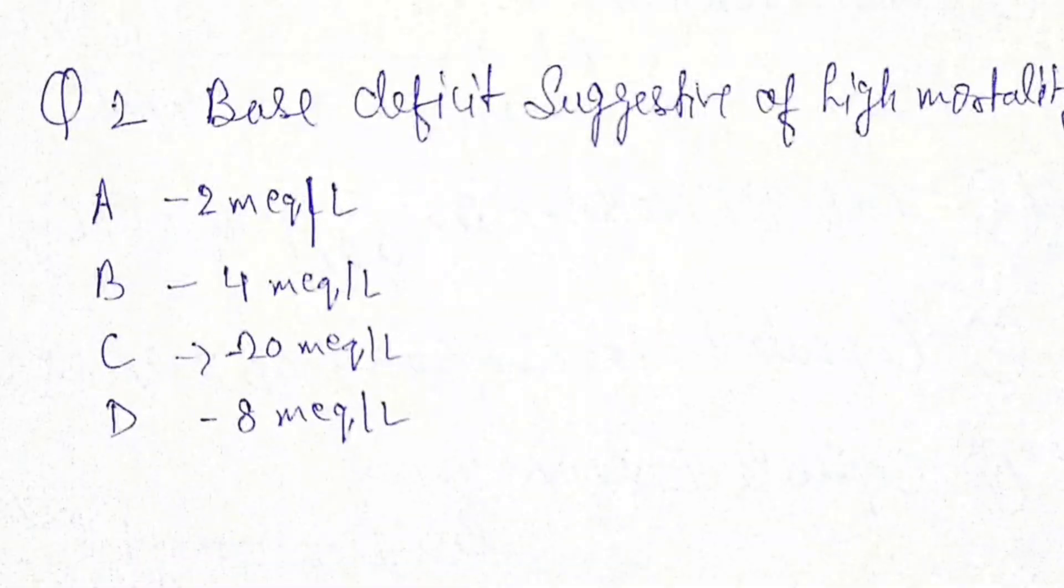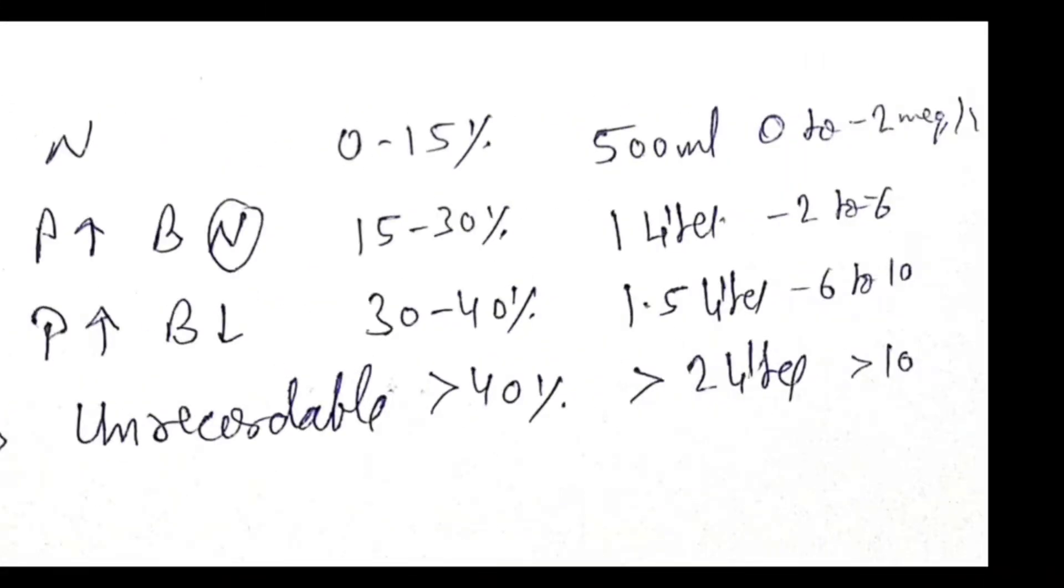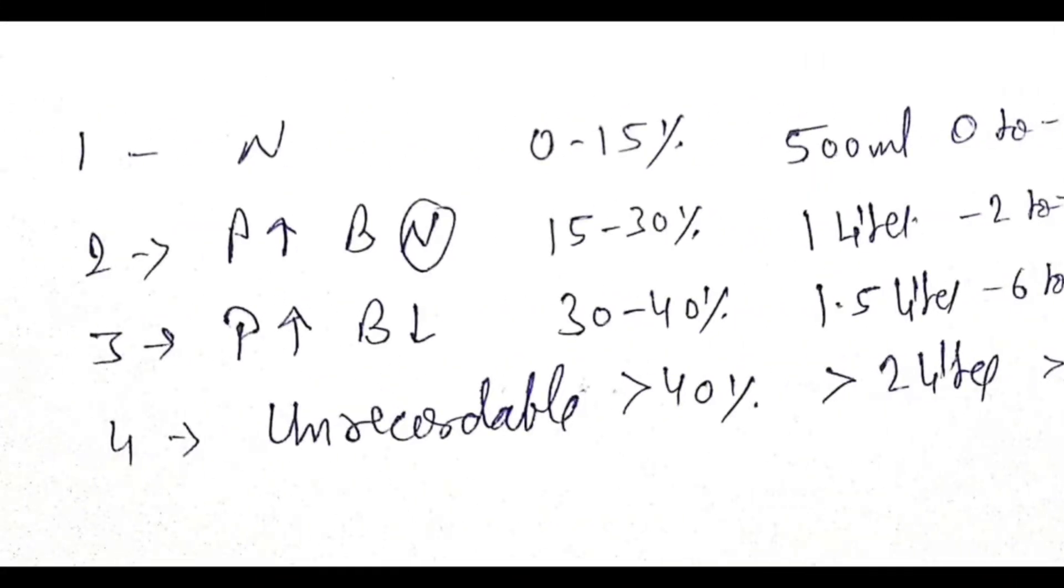Base deficit suggestive of high mortality: minus 2 mEq/L, minus 4 mEq/L, minus 20 mEq/L, or minus 8 mEq/L. So how to understand high mortality? This MCQ is from shock. Shock is a very high yield topic for all types of exams. Let's discuss, then you'll also be able to answer.